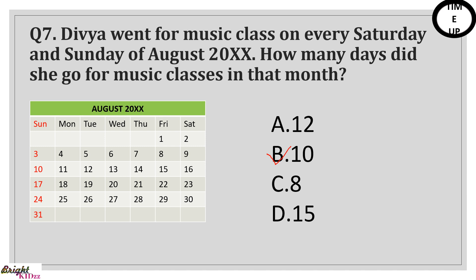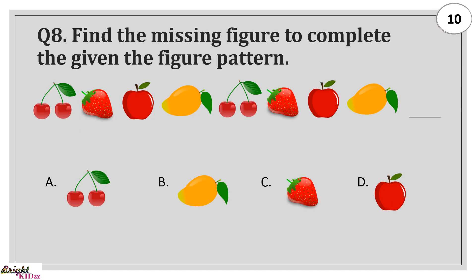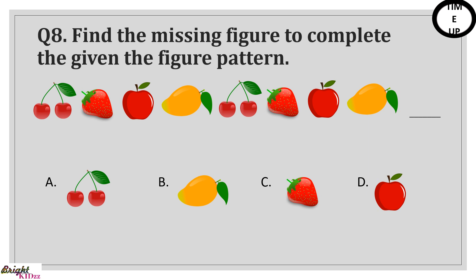Divia went for music class on every Saturday and Sunday of August. How many days did she go for music class in that month? Answer: B 10. There are 5 Sundays and 5 Saturdays.